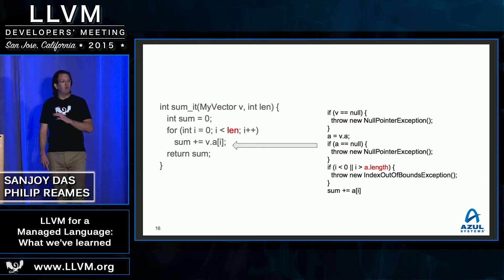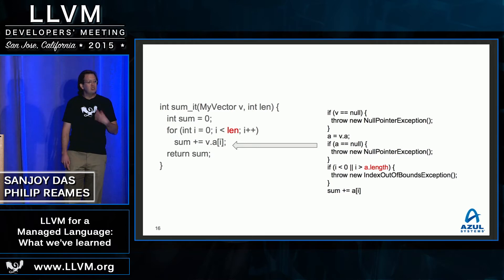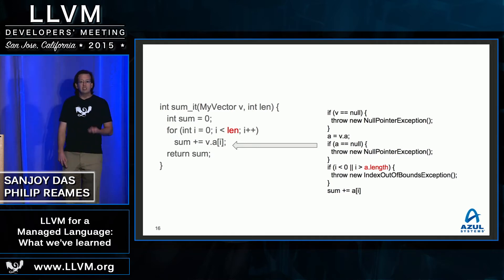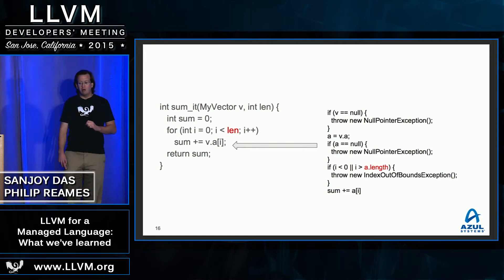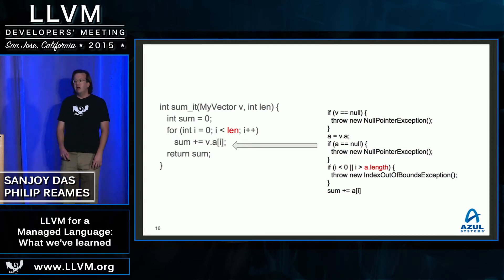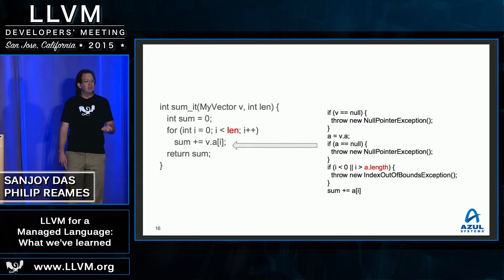To give you a brief feel for what typical Java code looks like: we have a loop on the left where somebody's implemented their own vector class and is just summing up the internal array. That single line in the middle actually doing the sum expands out to what we see on the right-hand side — it has a null check, the field load, another null check, a range check, and then finally the actual operation we'd like to optimize.